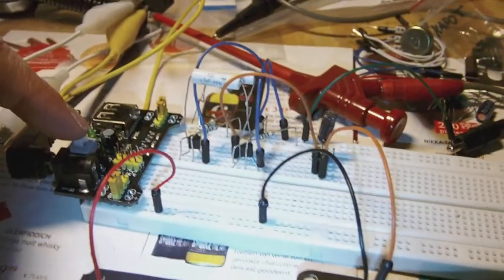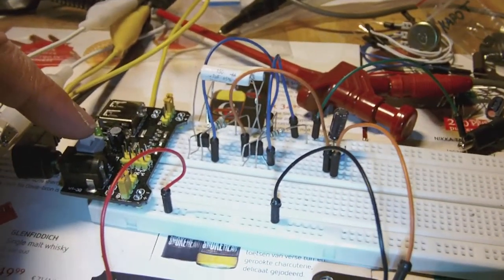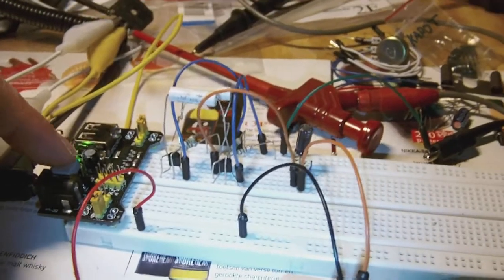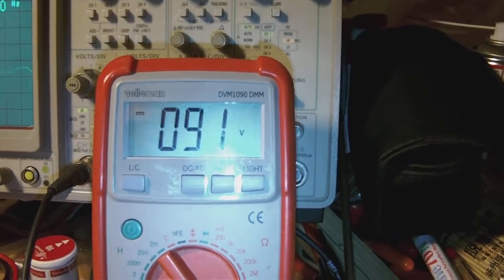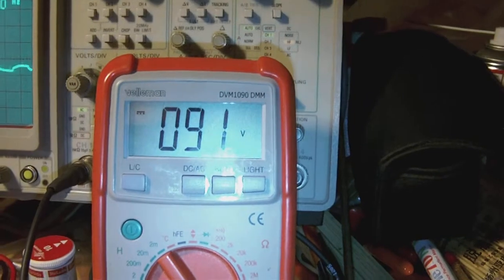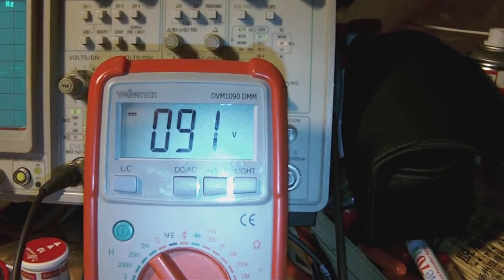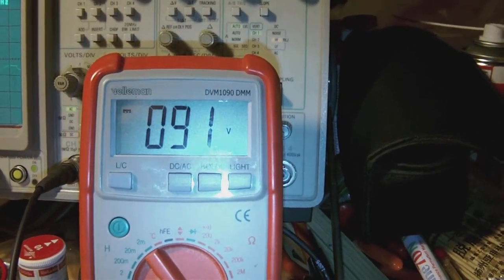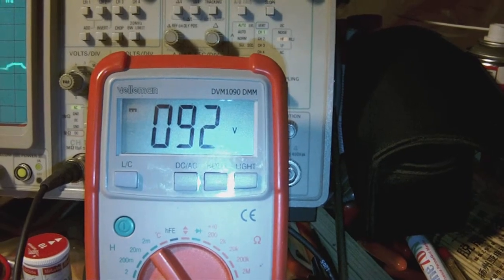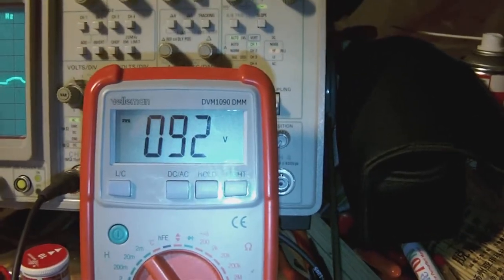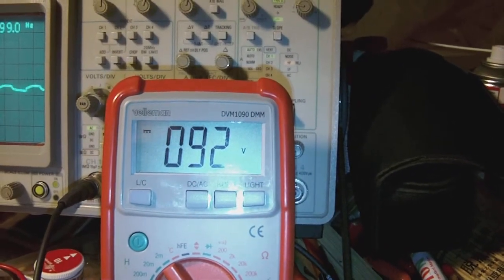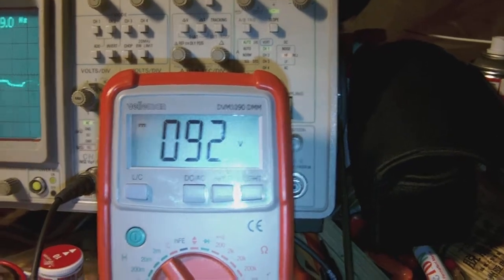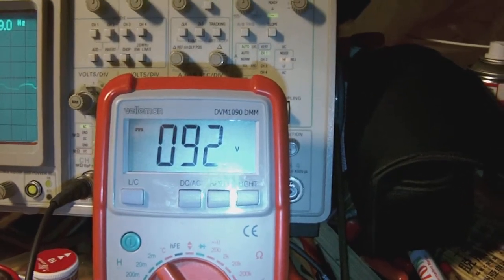Enough talking, now let's switch the whole thing on. It's powered on 18 volts DC and there you go, the output voltage is without a load around 93 volts DC. As you can see it fluctuates a little bit.